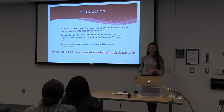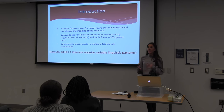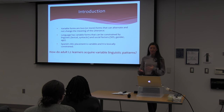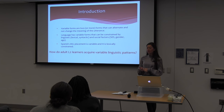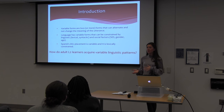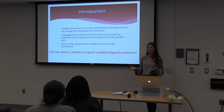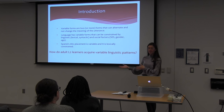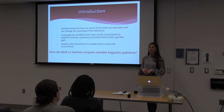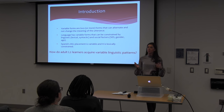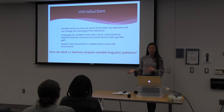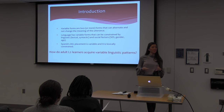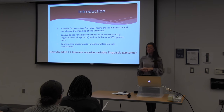Variable forms are two or more forms that can alternate but don't change the meaning of an utterance. Language has many variable forms that can be constrained by a linguistic factor — such as something lexical, meaning the words coming next in the sentence — or a social factor such as SES, which would be like working class versus middle class, gender, and age. Spanish clitic placement is variable and is also lexically constrained.